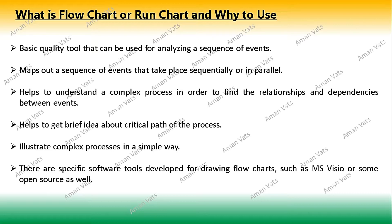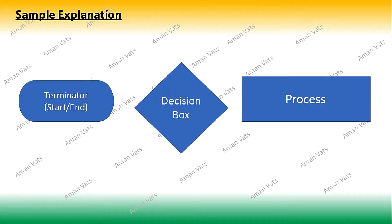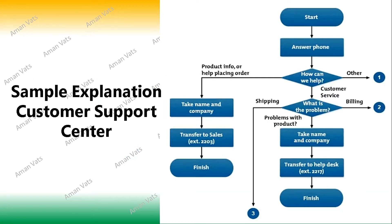There are specific software tools like MS Visio; you can also use Excel, PowerPoint, or Word to design such flowcharts. Now for basic shapes: this particular shape is used for a terminator like start or end, this is used as a decision box, and this denotes a process. These are the basic shapes, though a complete detailed flowchart may require multiple additional shapes.